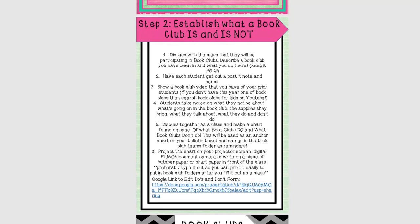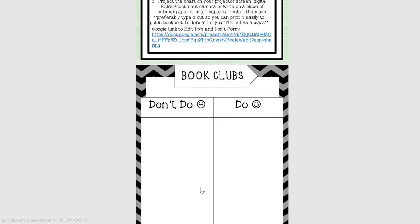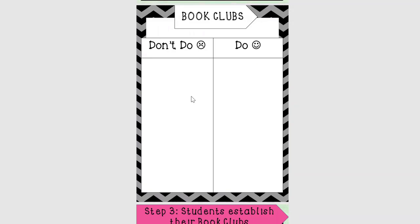You're going to want to talk about what a book club is, because chances are students haven't necessarily done book clubs before, especially at a third grade level. You need to establish what it is and what it isn't. You can go on YouTube and search 'book club video' — there are a lot of resources out there. What I like to do is show a video of my prior students from years past as an exemplar. Students get a post-it note and write down what they're noticing: what are the kids doing, what supplies do they have, what are they talking about? Then we discuss as a class and use the 'book clubs do and don't' form to come up with a list, which you can then copy and put in their book club folder.